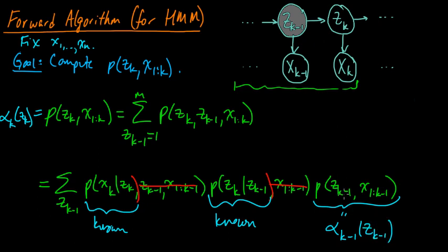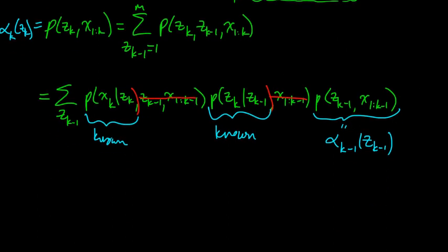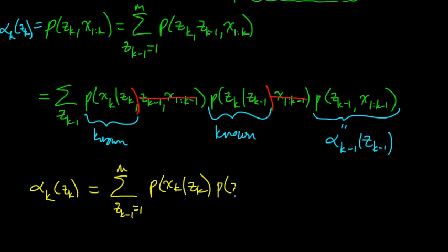And so this, under that definition, is alpha k minus 1 of zk minus 1. So it depends on the value that zk minus 1 takes here. So let's write down what we found. Let's write this nice little recursion. We get a recursion formula: sum over zk minus 1 from 1 to m, the emission probability xk given zk, the transition probability zk given zk minus 1, and the thing that we are recursing on, alpha k minus 1 of zk minus 1. So that's nice. And we can do this for any, so as long as k is 2 or more, then everything here makes sense. So this is for k equals 2 up through n. This formula applies. So this is a recursion in these alphas.